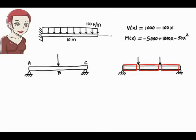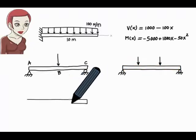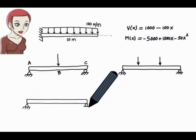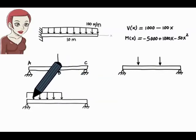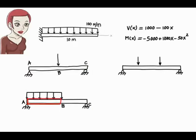The need for multiple shear and moment equations also arises when the beam is partially subjected to distributed loads. For example, a uniformly distributed load divides the beam into two segments: segment AB, which is directly under the load, and segment BC, which is load free. Therefore, we need one set of shear and moment equations for the left segment and another set for the right segment.